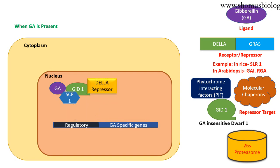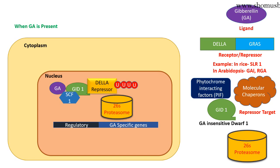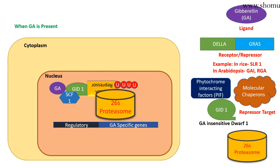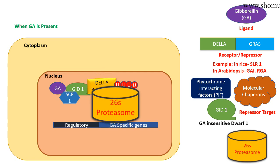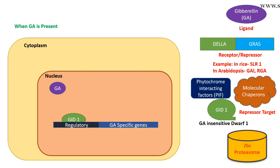Once GA associates with GID1 and the SCF complex, they recruit ubiquitin to the DELLA repressor, so the DELLA repressor becomes poly-ubiquitinated. As the DELLA repressor is poly-ubiquitinated, it is degraded via the 26S proteasome complex. Once the DELLA repressor is destroyed, GID1 is free to interact with the regulatory site of the GA-specific genes, and as a result, GA-specific gene transcription can begin.